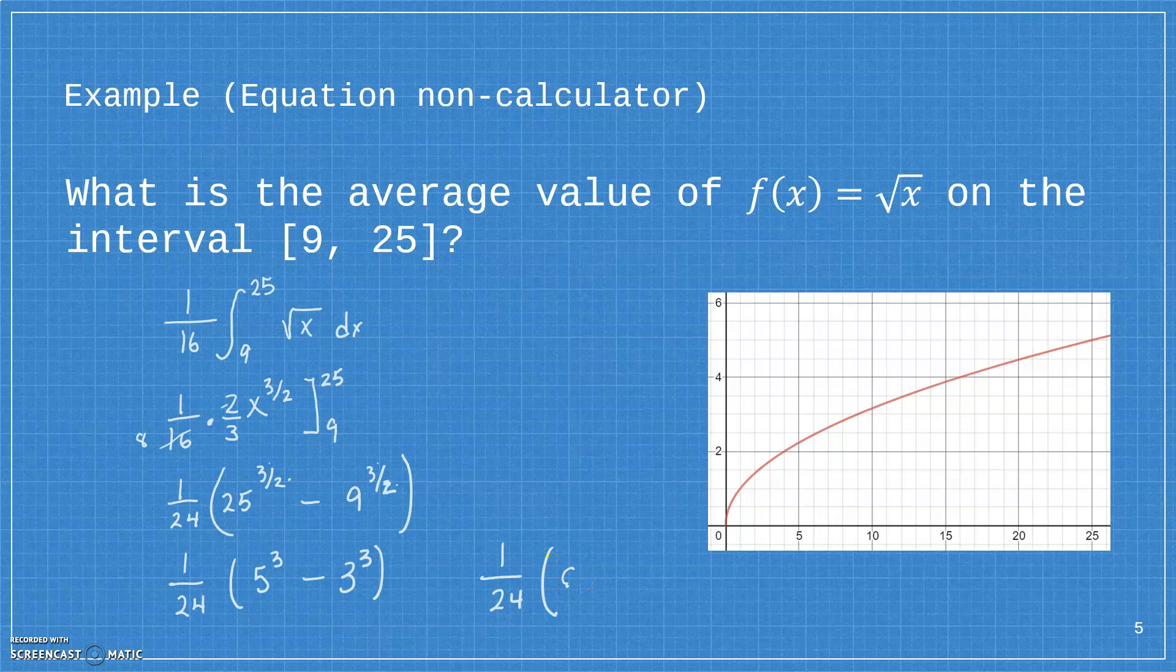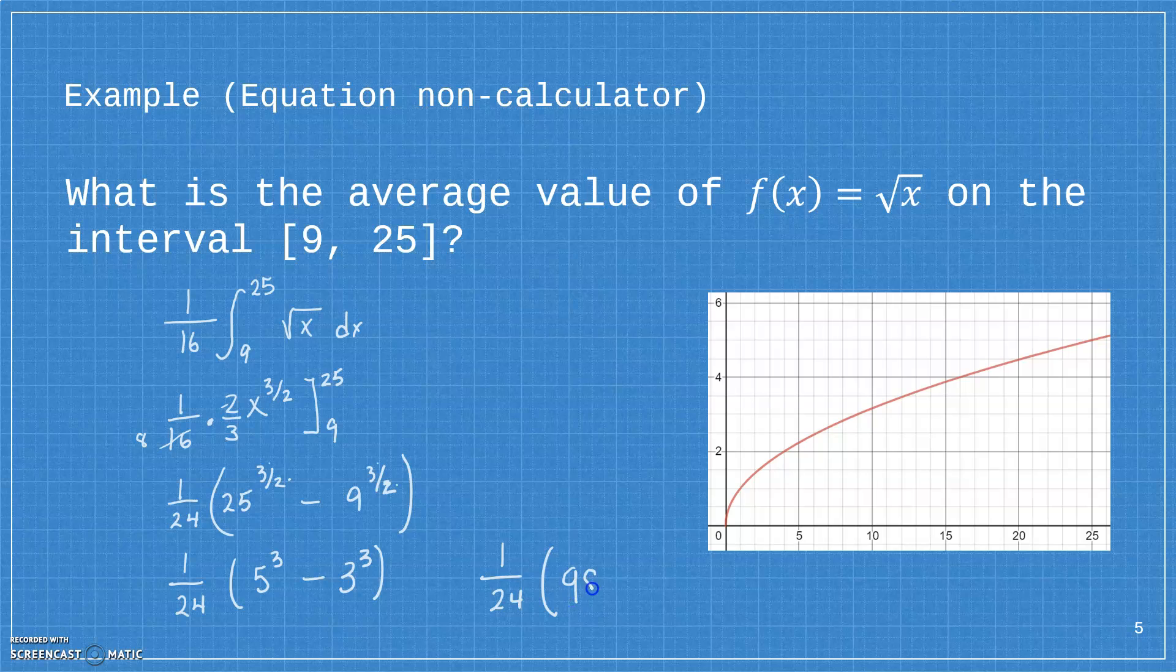Times 125 minus 27, that would be 98, or 98 over 24. And if I graph the integral, that would be the area. And then if I graph the average value, which is a little bit more than 4, I can see that sometimes my y-coordinate is higher than 4, sometimes it's lower than 4. But on average, it's about 4 on that interval.